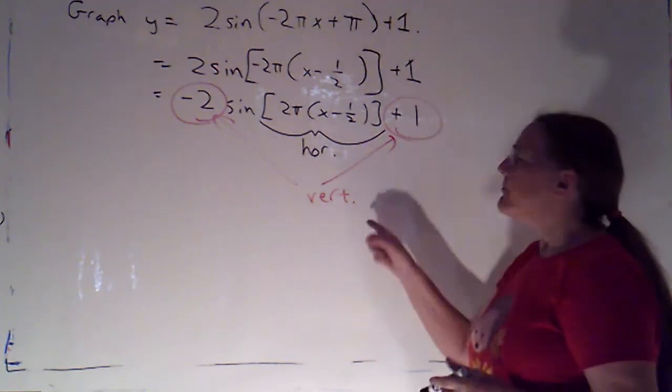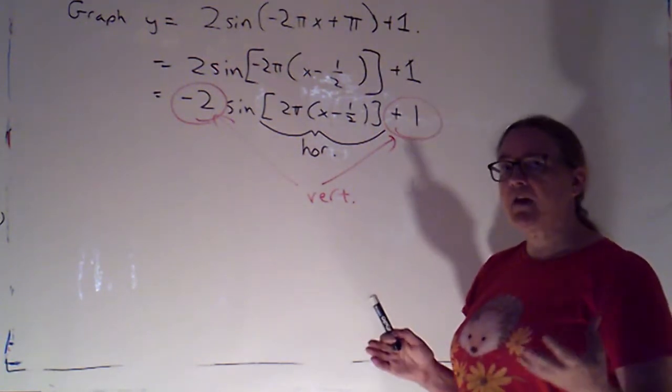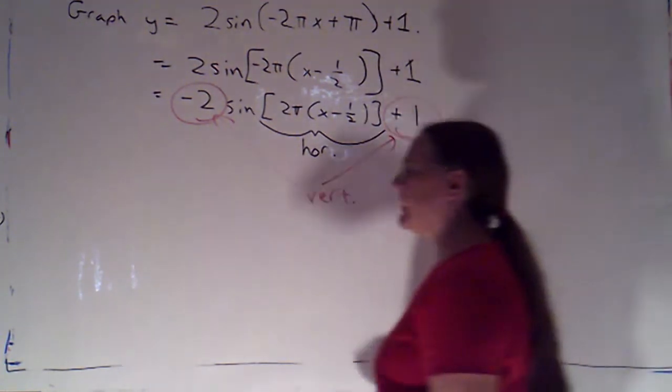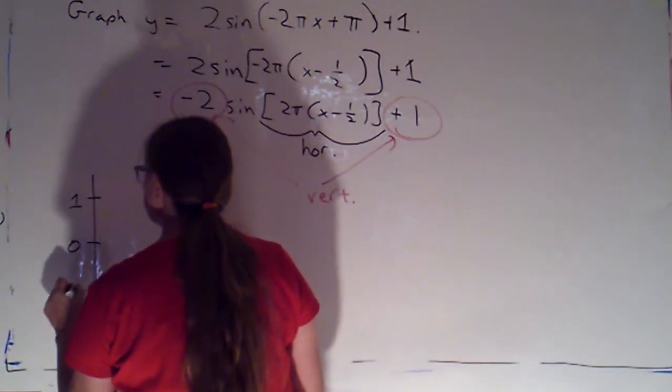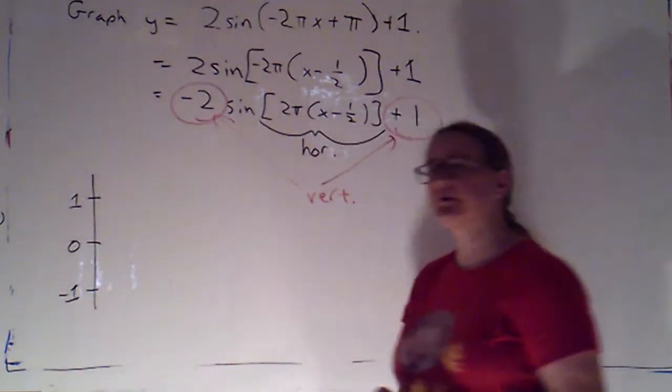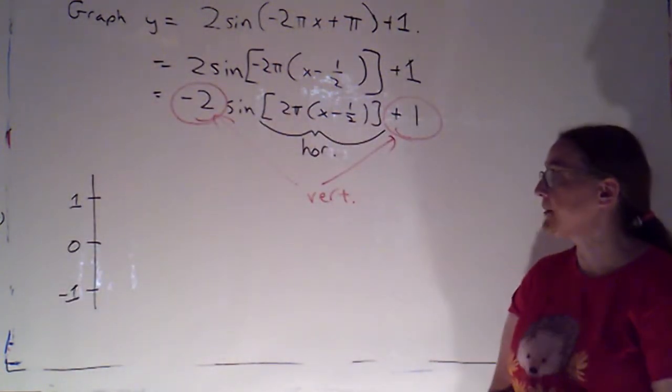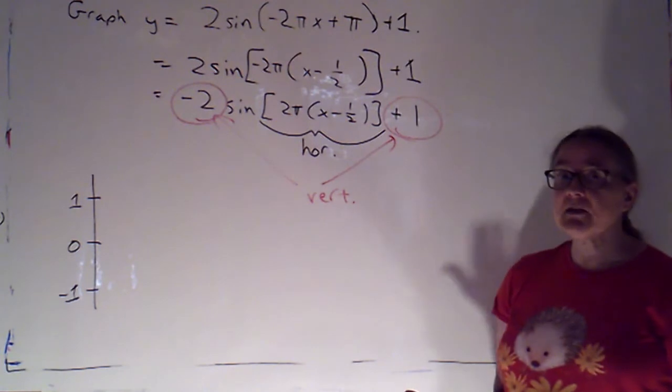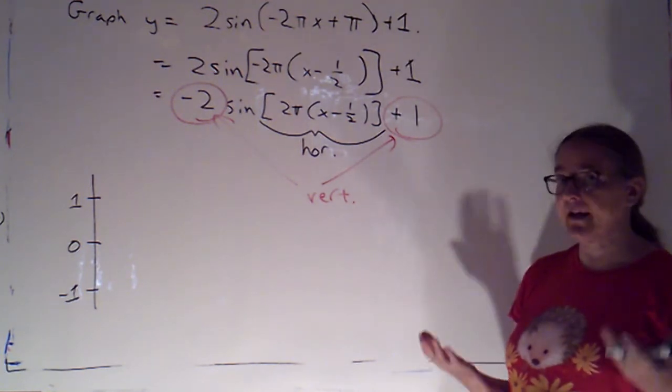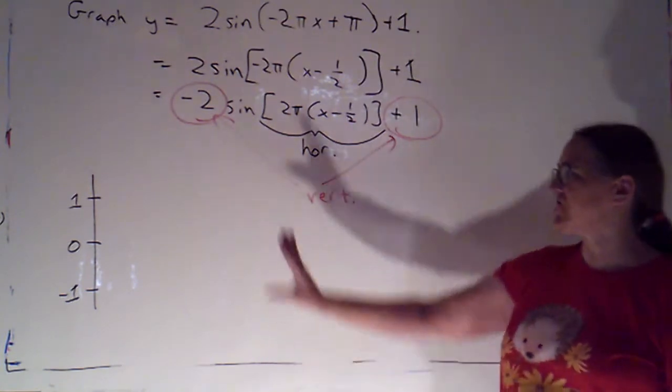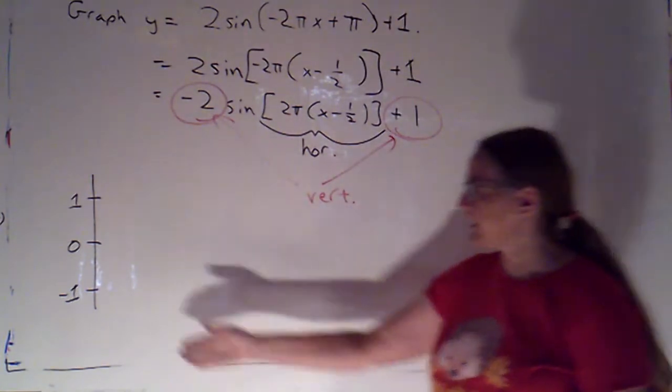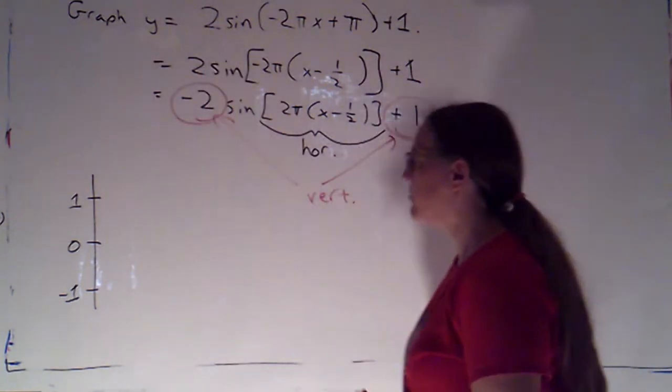It doesn't really matter. But with the vertical, I know that I just need to keep track of the high, middle, and low values. So before any transformations, the high is 1, the middle is 0, and the low is negative 1. And I do like to do my vertical transformations one at a time. But I'm not going to do the whole graph. I'm just going to keep track of these values. I've got a vertical axis with high, middle, and low marked off.